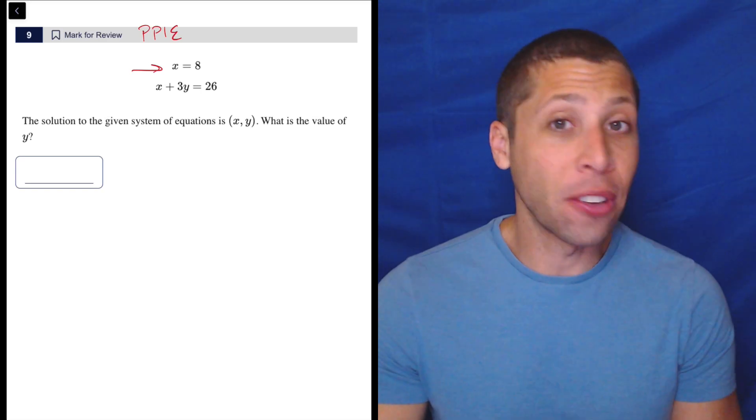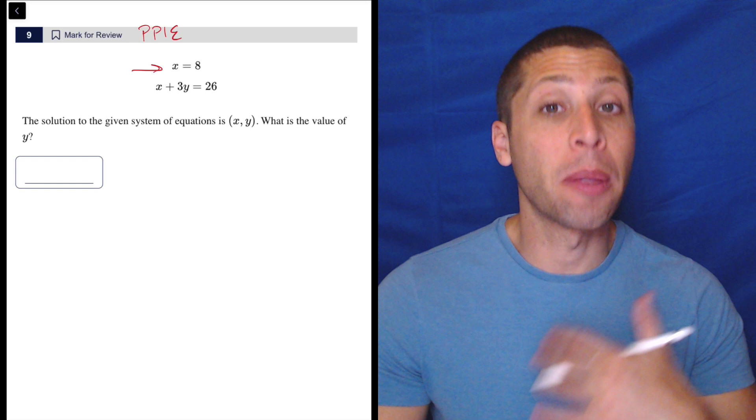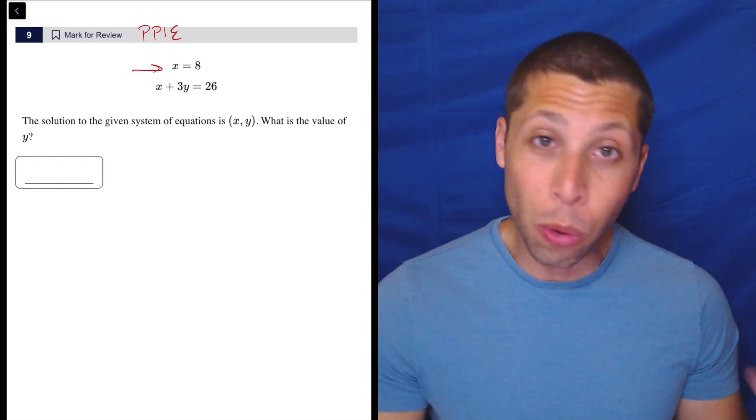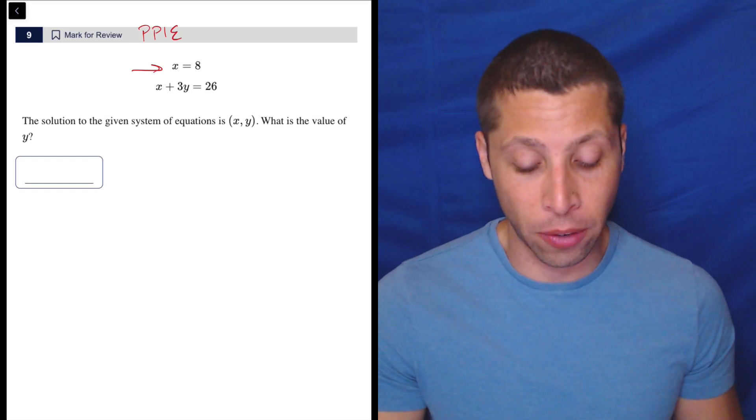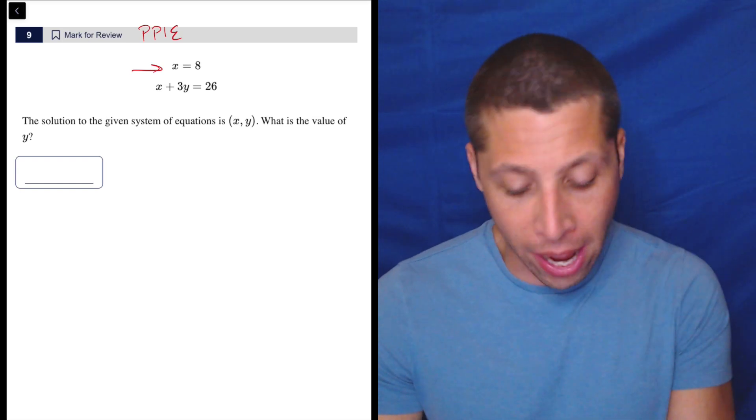You should recognize that this is a very different kind of system than some of the more complicated ones where we would want to put it into Desmos and see that point of intersection. Here, just plug eight in for X.